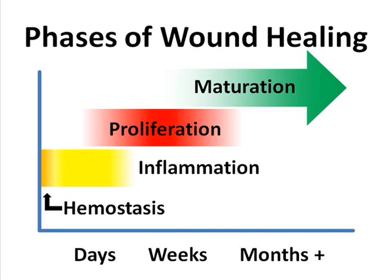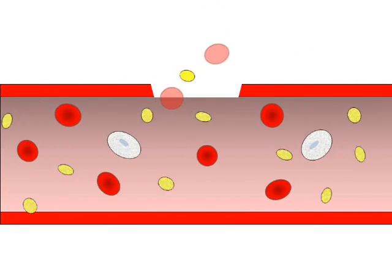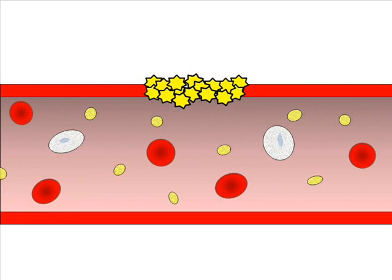Hemostasis is commonly included as a component of the inflammation phase, but since we've examined hemostasis in a separate video, we'll only briefly comment on hemostasis before continuing with the remainder of the inflammation phase. Hemostasis is the body's attempt to quickly stop bleeding without unnecessarily disrupting normal blood flow. In the separate video entitled hemostasis, we saw the constriction of an injured blood vessel, the formation of a platelet plug, and the strengthening of that plug by the addition of fibrin strands.